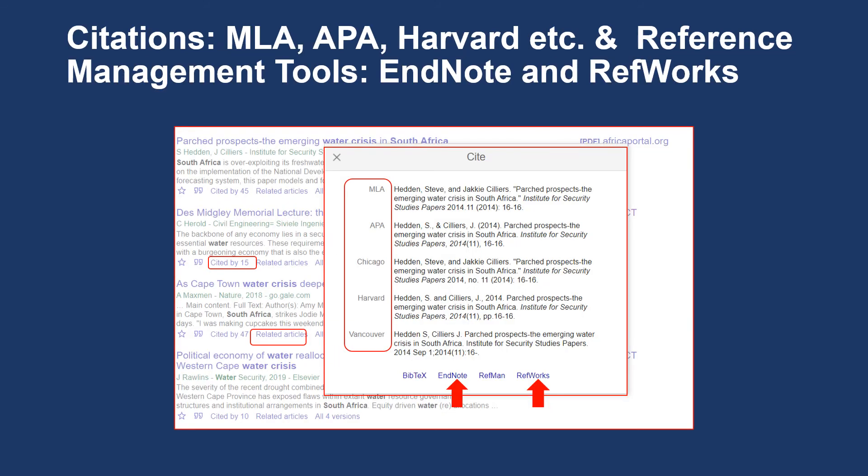Google Scholar provides a range of citation styles such as MLA, APA, Harvard and so forth, and these can be imported to different reference management tools like Endnote and RefWorks. You can also check to see who is citing the article by clicking on cited by, as well as find related articles.